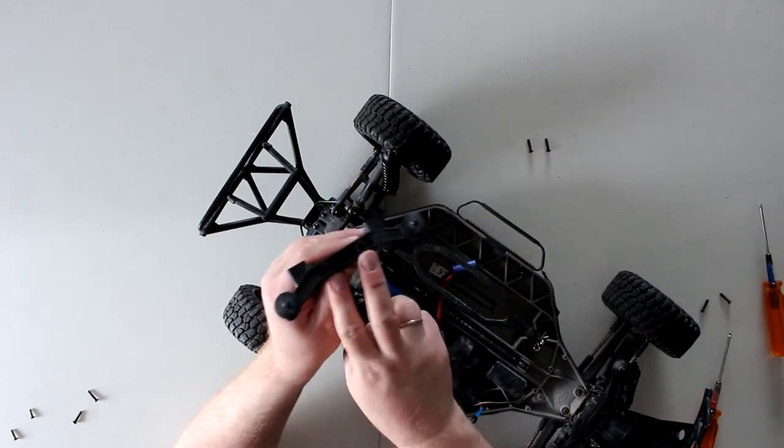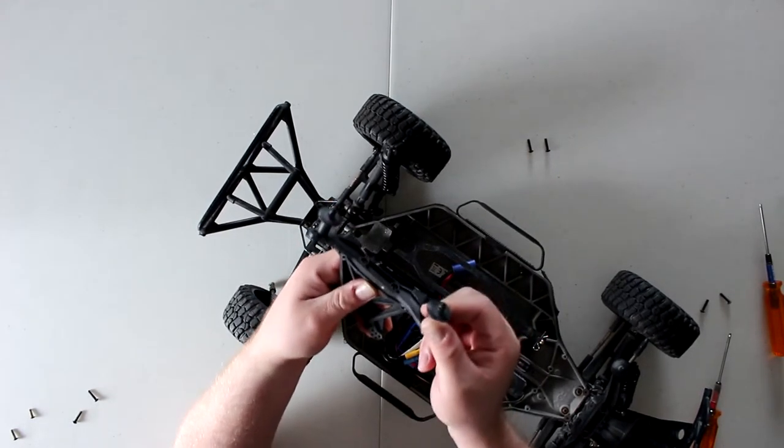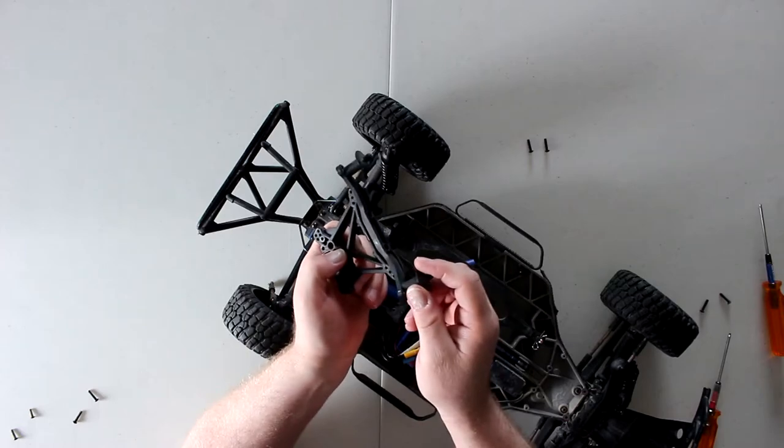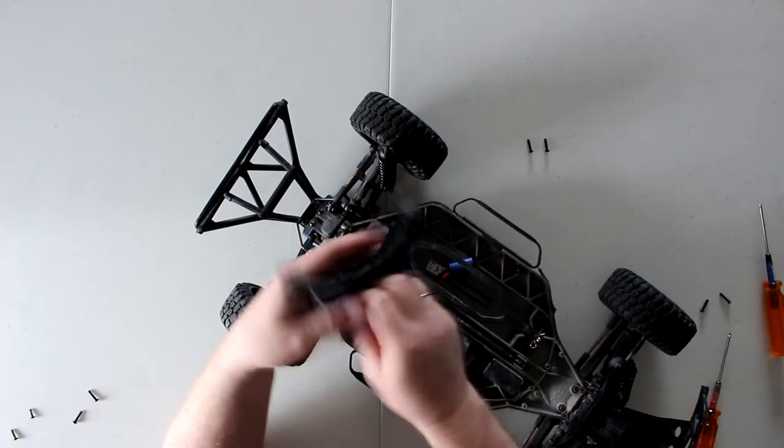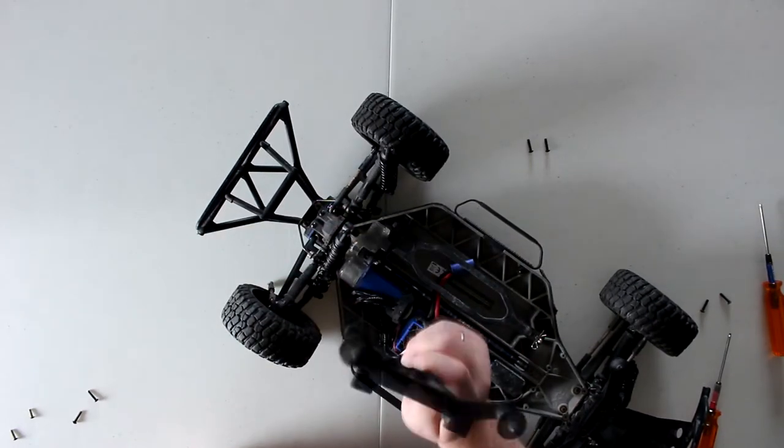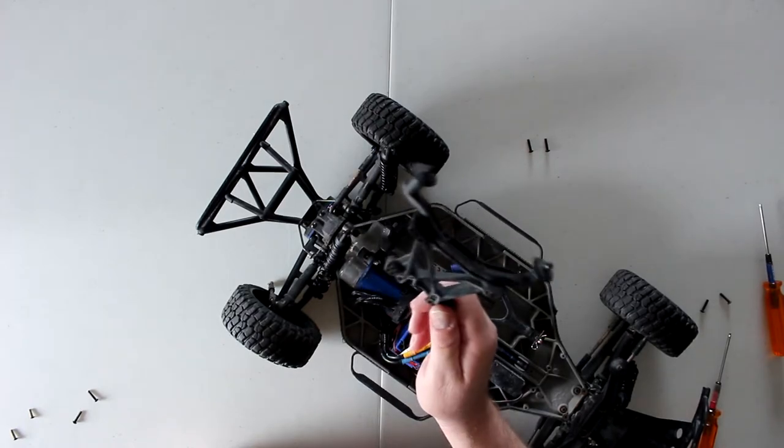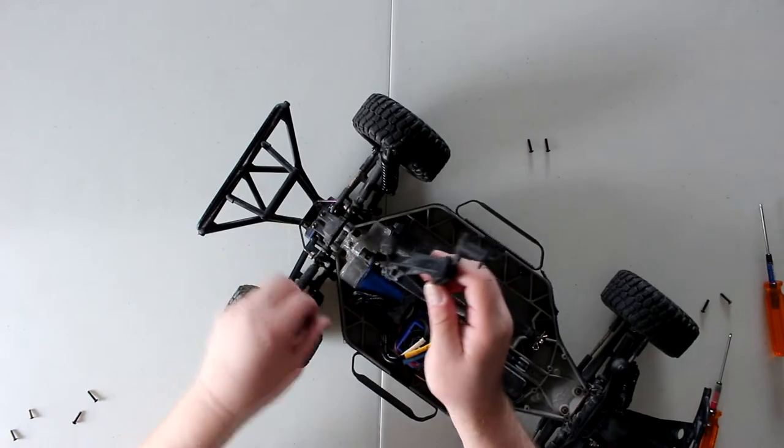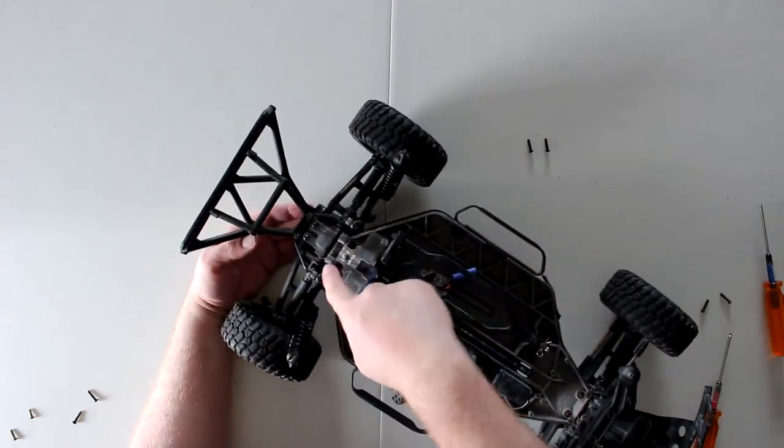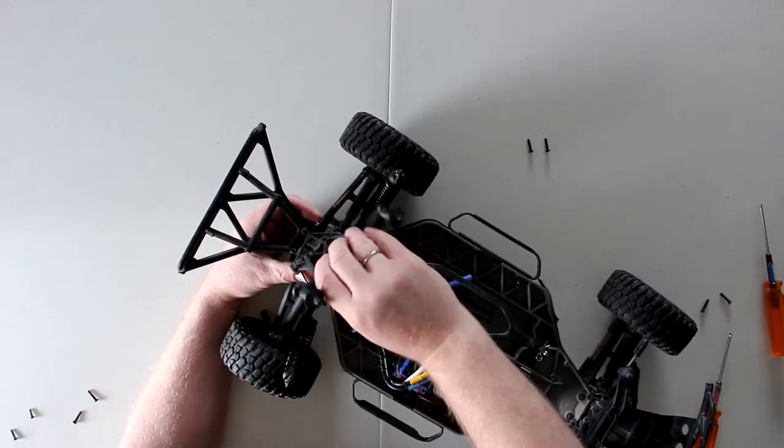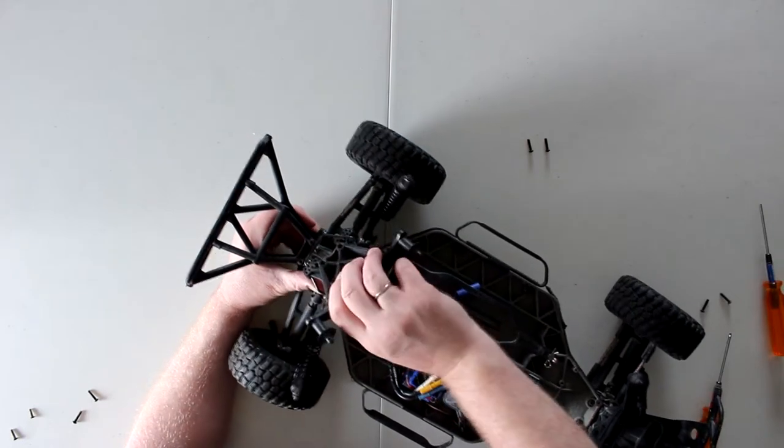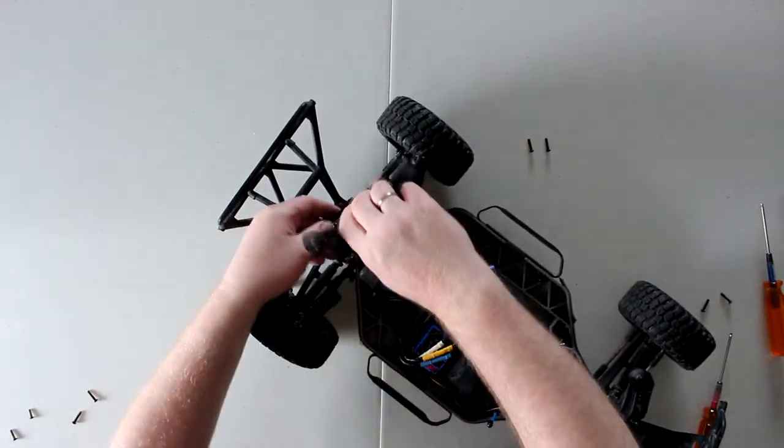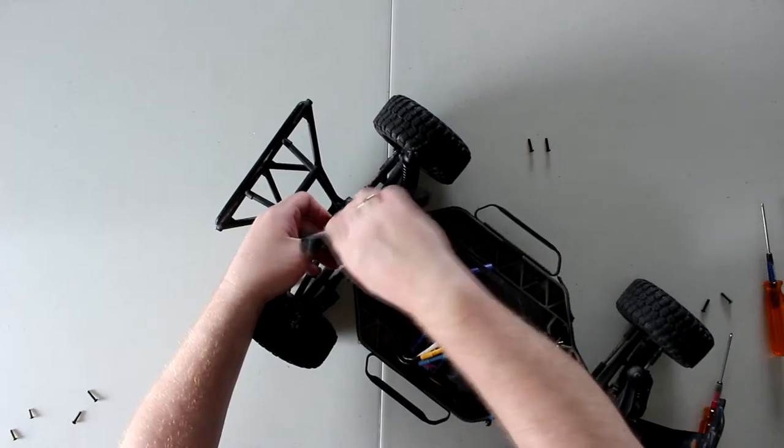Now two more screws on top here to remove this part of the shock tower. Then you grab your new one—could be the aluminum one, could be the RPM version, or even a replacement directly from Traxxas. It is keyed here, just make sure to insert it with your sway bar if you do have it.